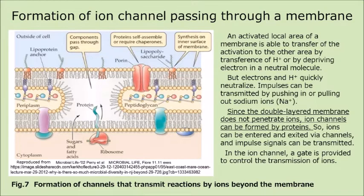But electrons and H-plus quickly neutralize. Impulses can be transmitted by pushing in or pulling out sodium ions. Since the double-layered membrane does not penetrate ions, ion channels can be formed by proteins. So, ions can be entered and exited via channels, and impulse signals can be transmitted. In the ion channel, a gate is provided to control the transmission of ions.